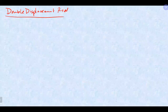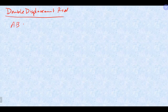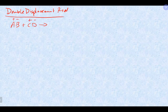In general, a double displacement reaction can be recognized by the reaction of two ionic compounds — positive, negative, positive, negative. When you have two ionic compounds like this, the two positive ions switch partners. A would go over here, and C would come over here, making two new ionic compounds.